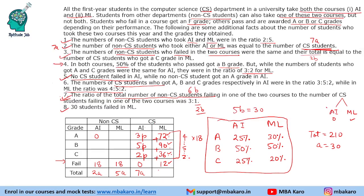So A equals 30, giving us 210 and 210 for CS AI and ML totals. Then 5A will be 150 and 2A will be 60. No one failed in AI, so the CS AI passed students are 10P, giving P equals 21. So the A, B, C values for CS in AI are 63, 105, and 42 respectively.